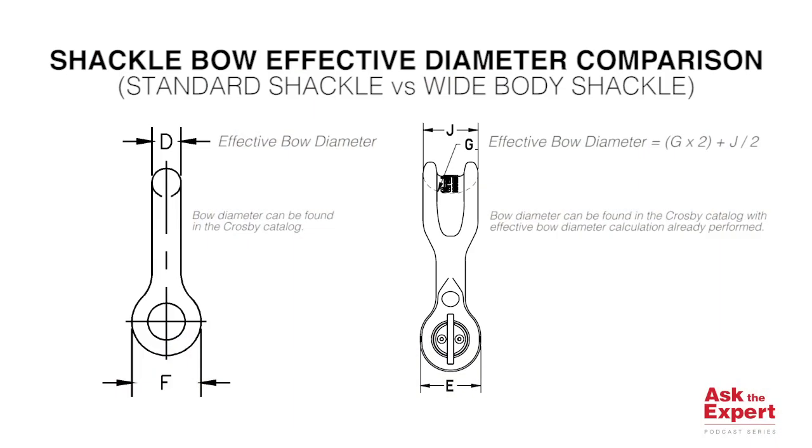The answer is no. Due to the unique shape of the Crosby widebody shackle, the effective bow diameters are calculated differently. First, let's discuss how someone can determine the shackle bow diameter of a standard Crosby shackle. The bow diameter is simply the diameter of the bow as measured in this orientation, which is dimension D in the Crosby catalog.